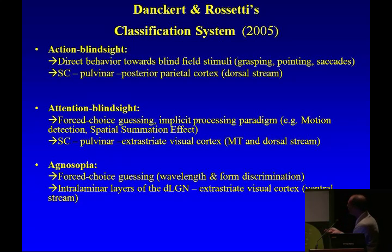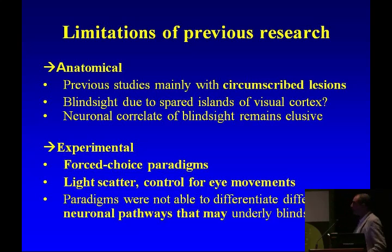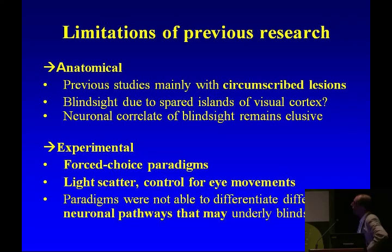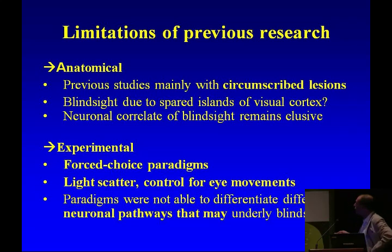Then there's agnosopsia, where forced choice guessing involves looking at wavelengths and form discrimination — highly unlikely to appear in our case. The limitations of previous research include anatomical issues: previous studies mainly used subjects with circumscribed lesions, and blindsight may be due to spared islands of visual cortex. So the neuronal correlate of blindsight remains elusive from such subjects. The type of experiment — typically a forced choice paradigm — may also reflect subject bias rather than true residual visual abilities.